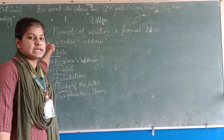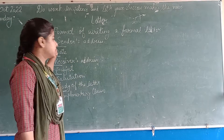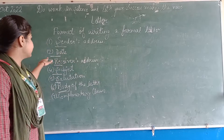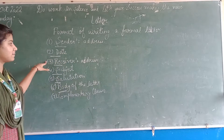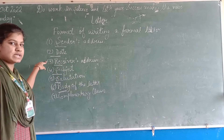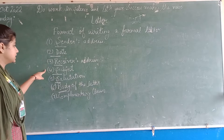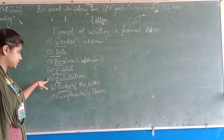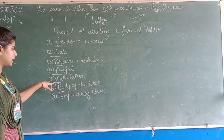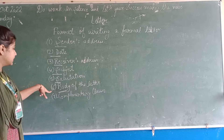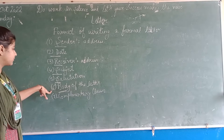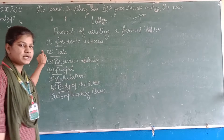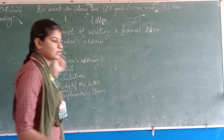To recap: the first step is the sender's address, then leave one line and write the date, then leave one more line and the third step is the receiver's address. Leave one line then subject, leave one line then salutation, leave one line then body of the letter, and then last leave one line and the complimentary close. This is the format of writing a formal letter.